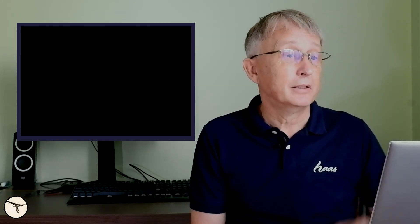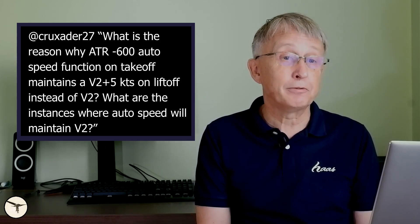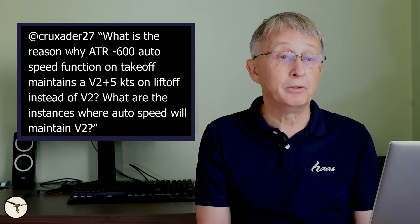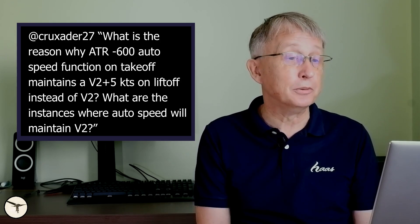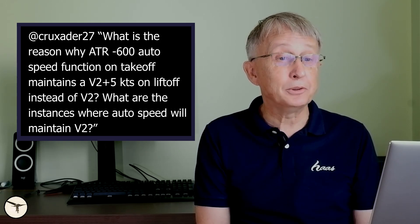And last question. What is the reason why ATR-600 autospeed function on takeoff maintains V2 plus 5 knots on liftoff instead of V2? What are the instances where autospeed will remain V2?